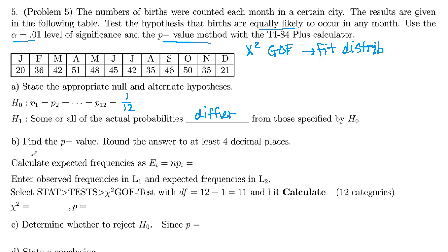So we've got our null and alternative. Step B here, go ahead and find our p-value. We're going to round our answer to at least four decimal places.